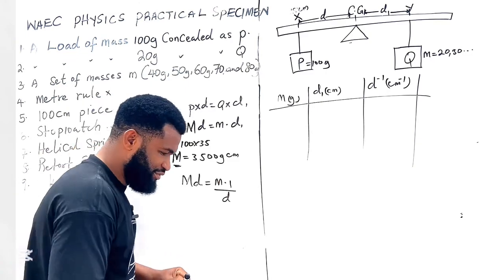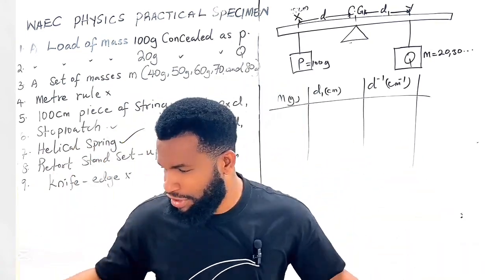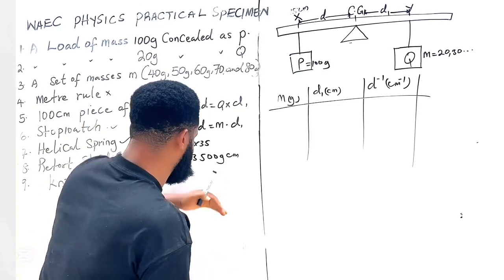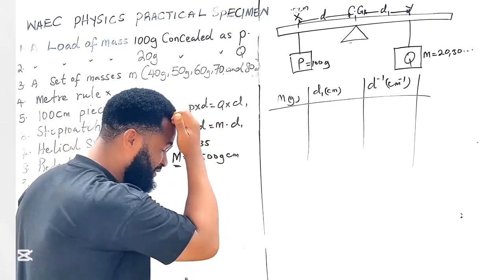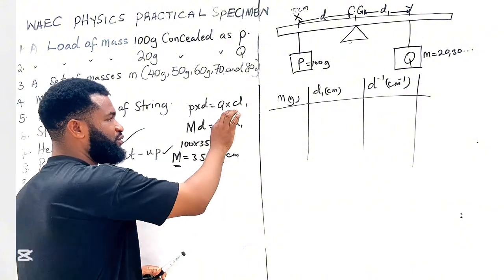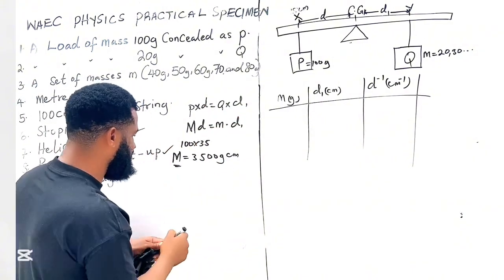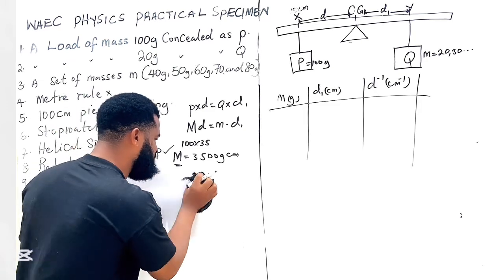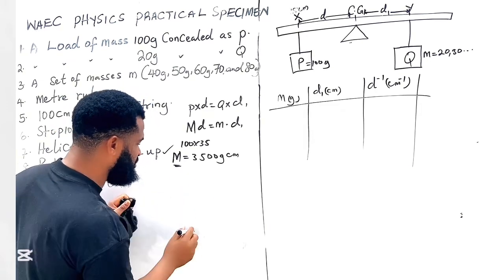Well, from this d inverse, you are going to have this: M·d is equal to m multiplied by 1 over d. See what I was trying to explain. Remember that this side of the moment must be equal to this side of the moment.